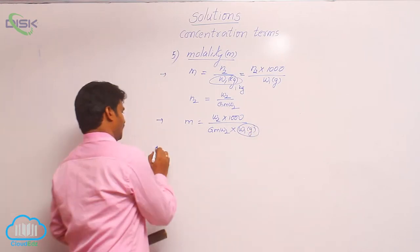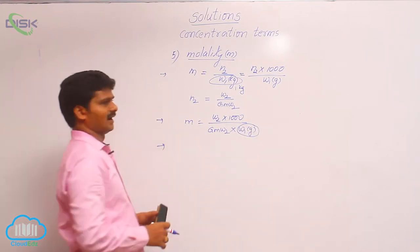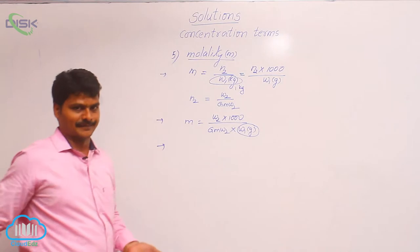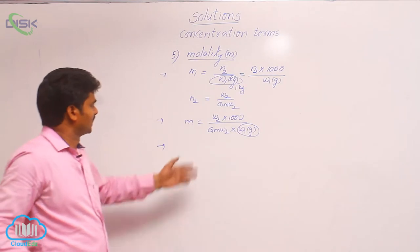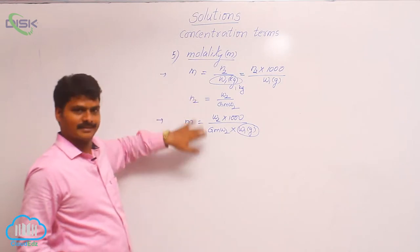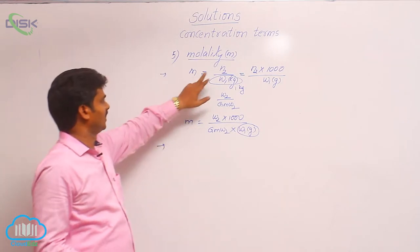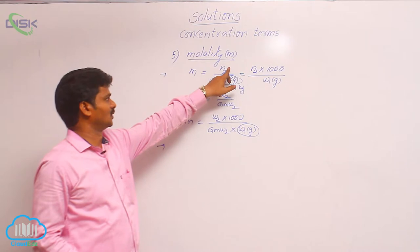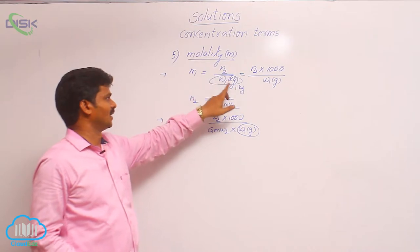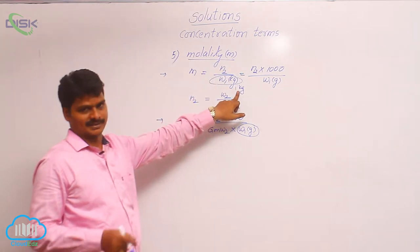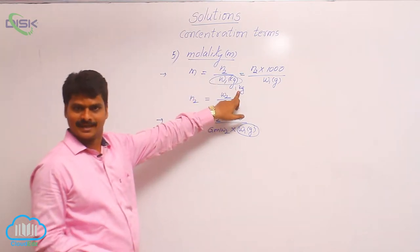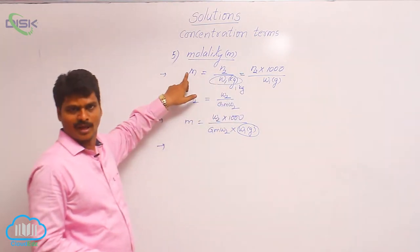After the formula and definition: the number of moles of solute present in 1 kg of solvent is called molality.